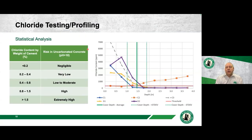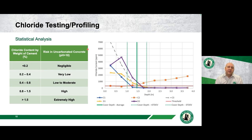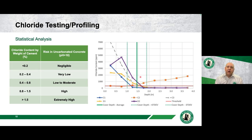Chloride testing is important because as the level of chloride in concrete increases, we get an increased probability of corrosion. There are two ways of expressing this: by weight of cement or parts per million. By weight of cement is more accurate but requires knowing the cement content via XRD analysis. In the graph on the right, you can see mean concrete cover with standard deviation plotted against the threshold where corrosion becomes a problem — the majority of samples show a heightened risk of corrosion at the depth of steel.